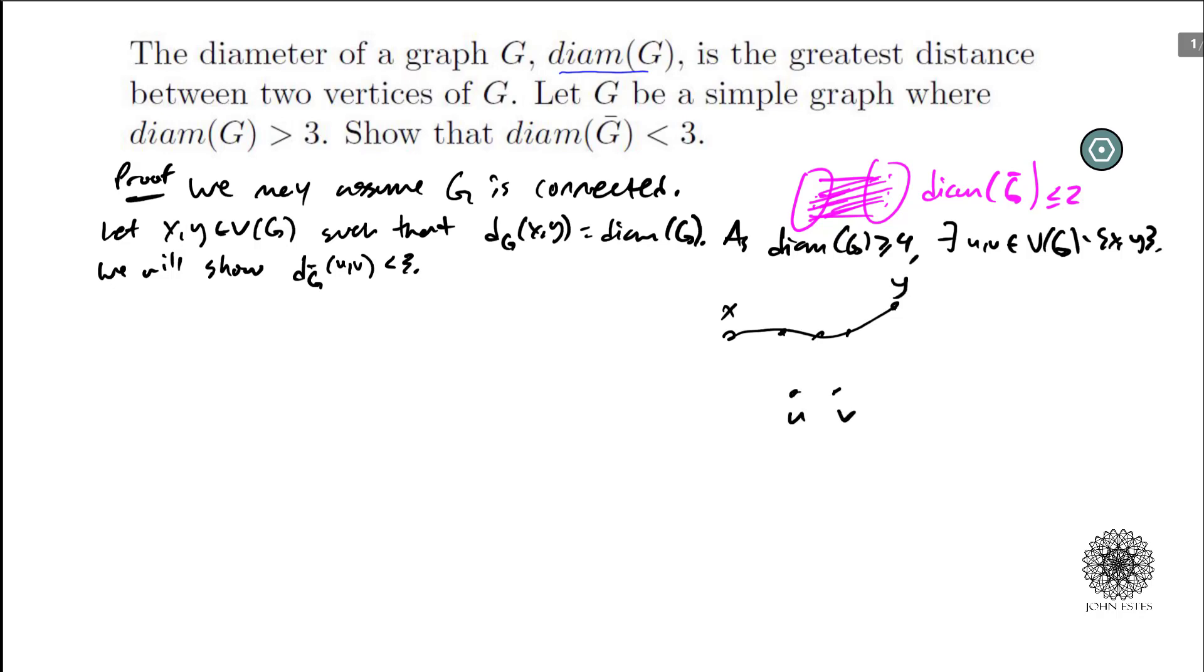So here's our picture right now, UV. Okay so first of all, if UV is not an edge in G, then we know what? That their distance in the complement is going to be 1.